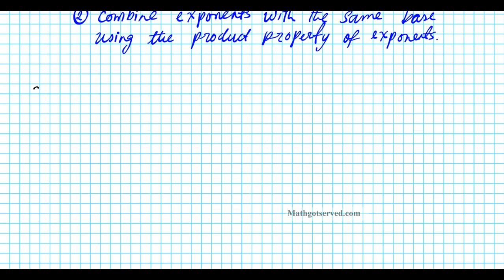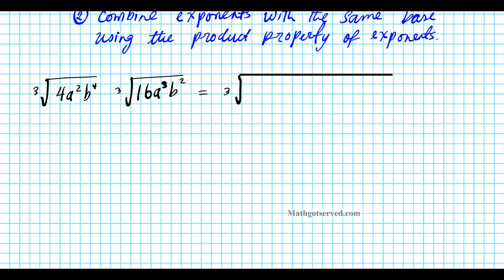We have the third root of 4a squared b to the fourth times the third root of 16a to the third b squared. Since they have identical roots, I can combine them into one — I'll just have the third root of the product of the radicands. So it's going to be the third root of 4 times 16, placing the constants next to each other, times a squared times a to the third, times b to the fourth times b to the second power.